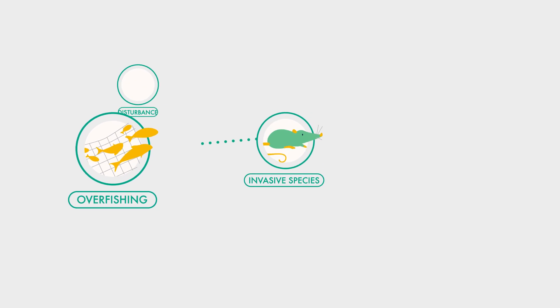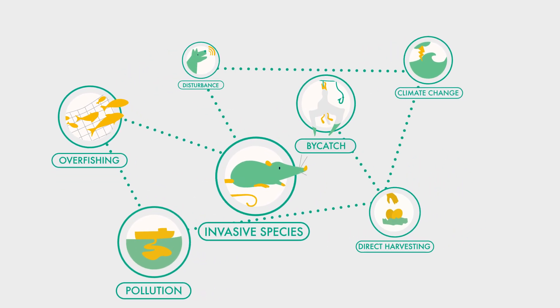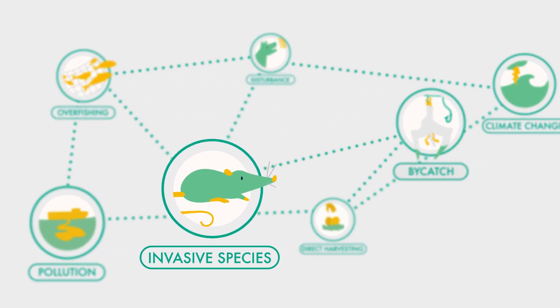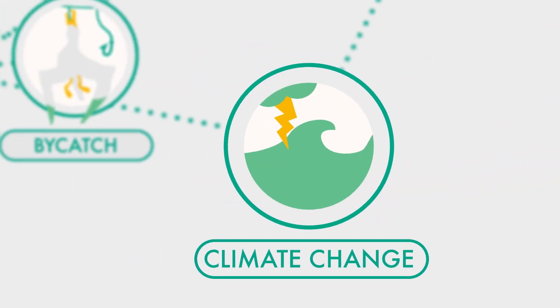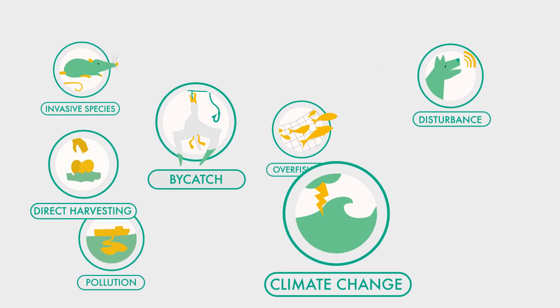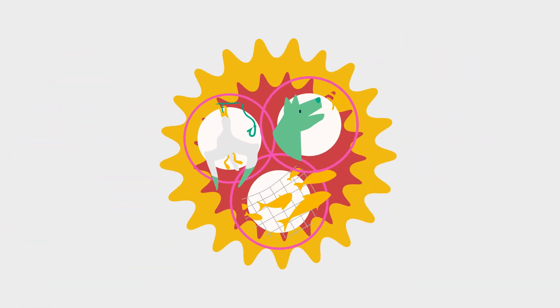There are several threats to seabirds, but the main causes of seabird population declines are invasive alien species, bycatch in fisheries, and climate change. To make the situation worse, many species are impacted by multiple threats at once.